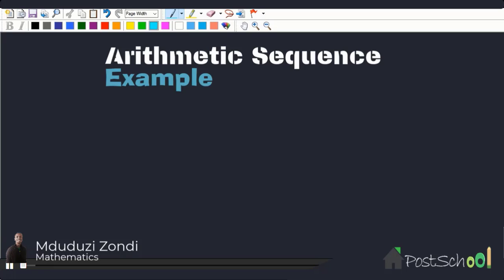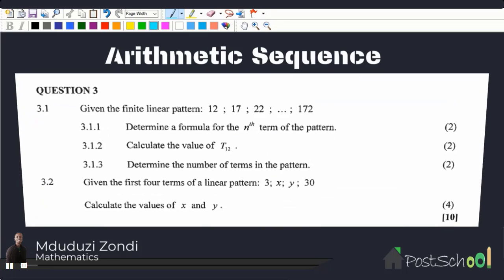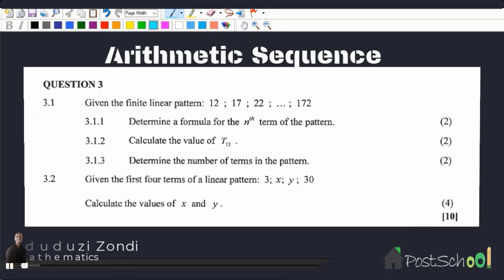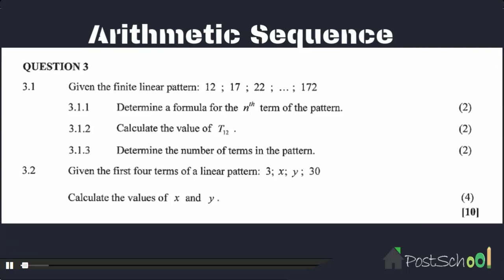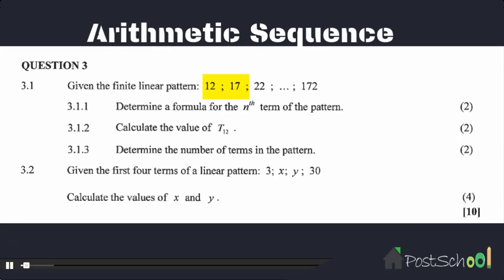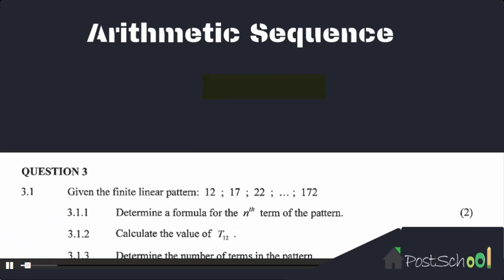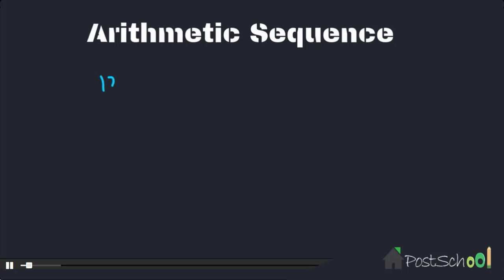Let's do this question. Given a linear pattern: 12, 17, 22, and 172. We have 12, we have 17, we have 22, and then this goes up to 172.